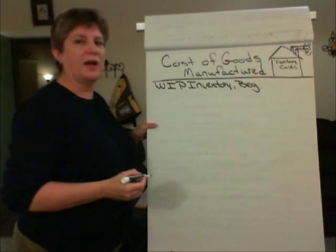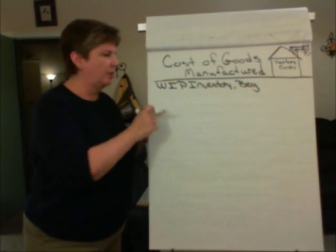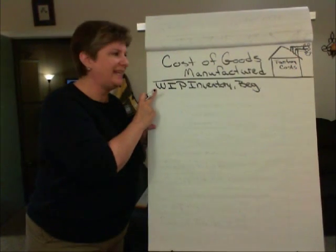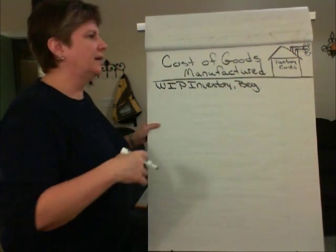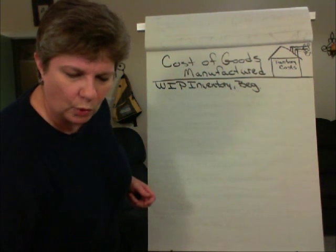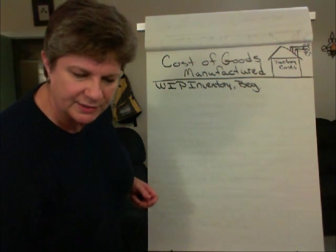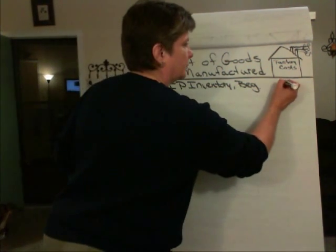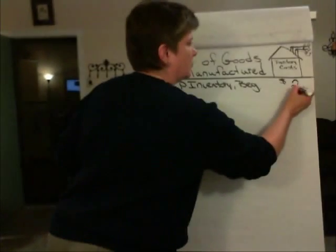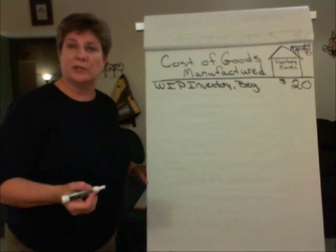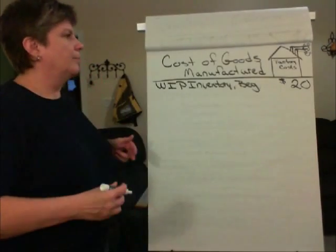We begin with work in process inventory beginning — I'll abbreviate work in process as WIP. Let's make up some numbers to keep the illustration simple. Let's say that our beginning work in process inventory balance was $20.